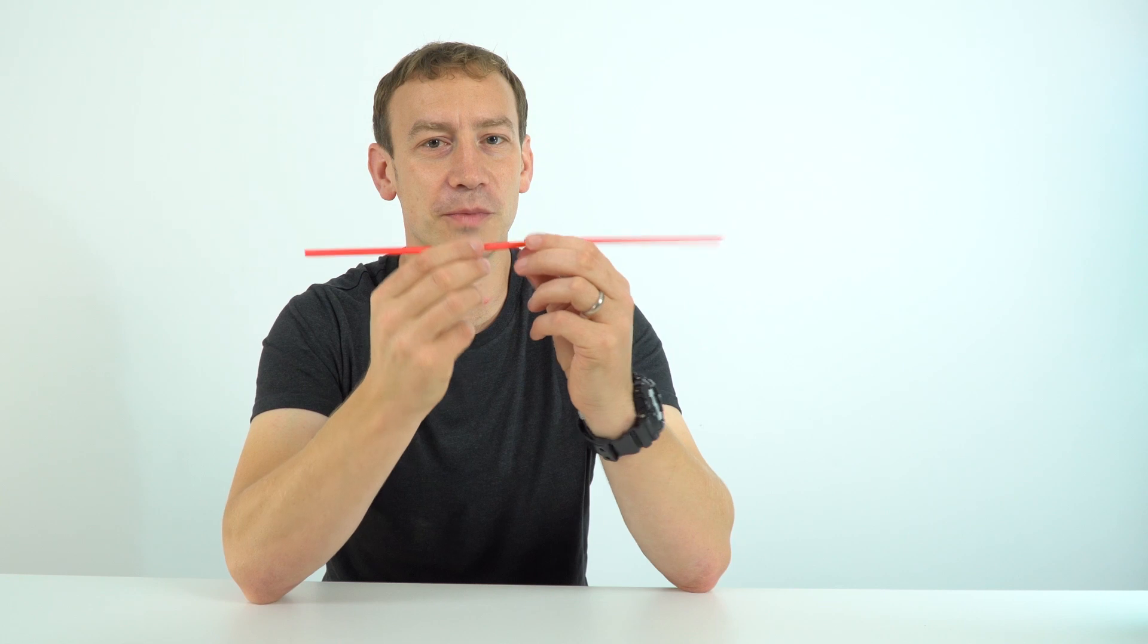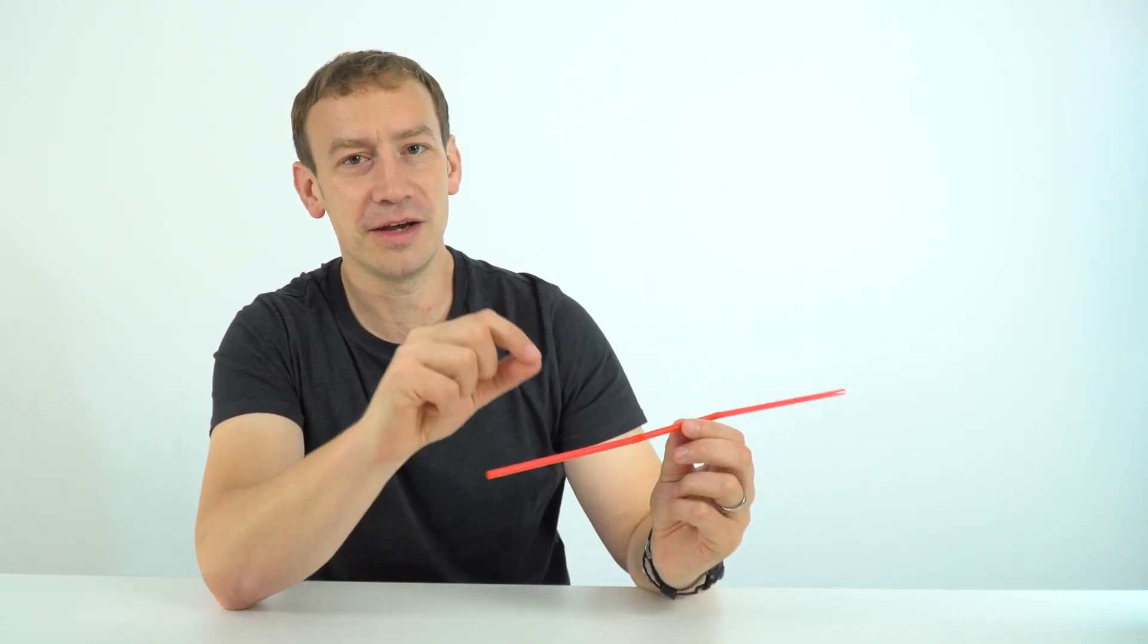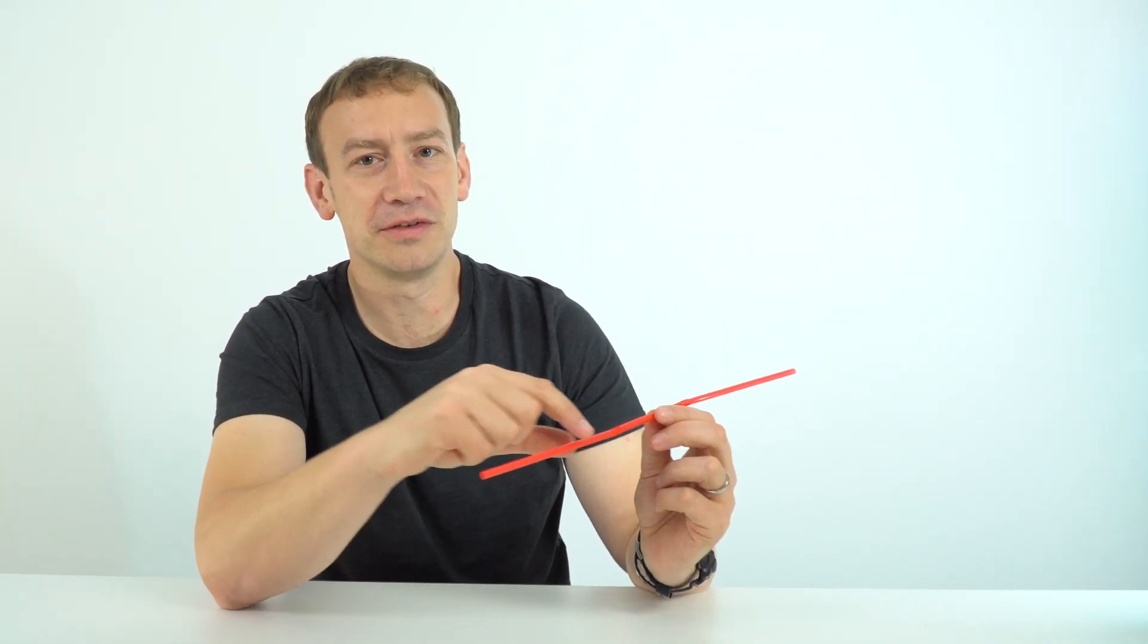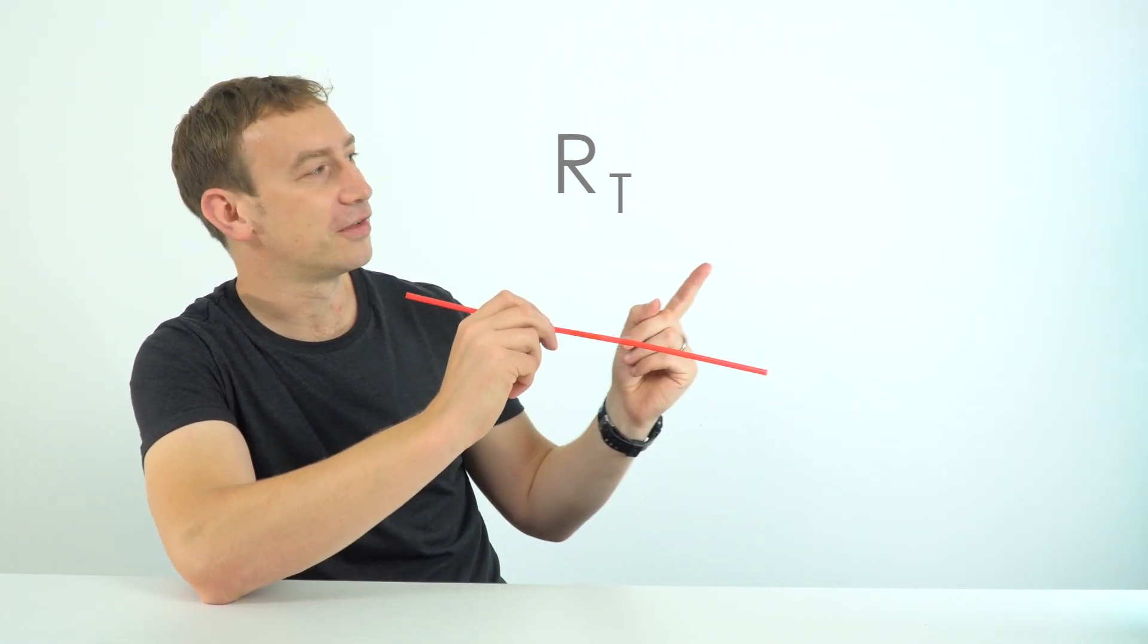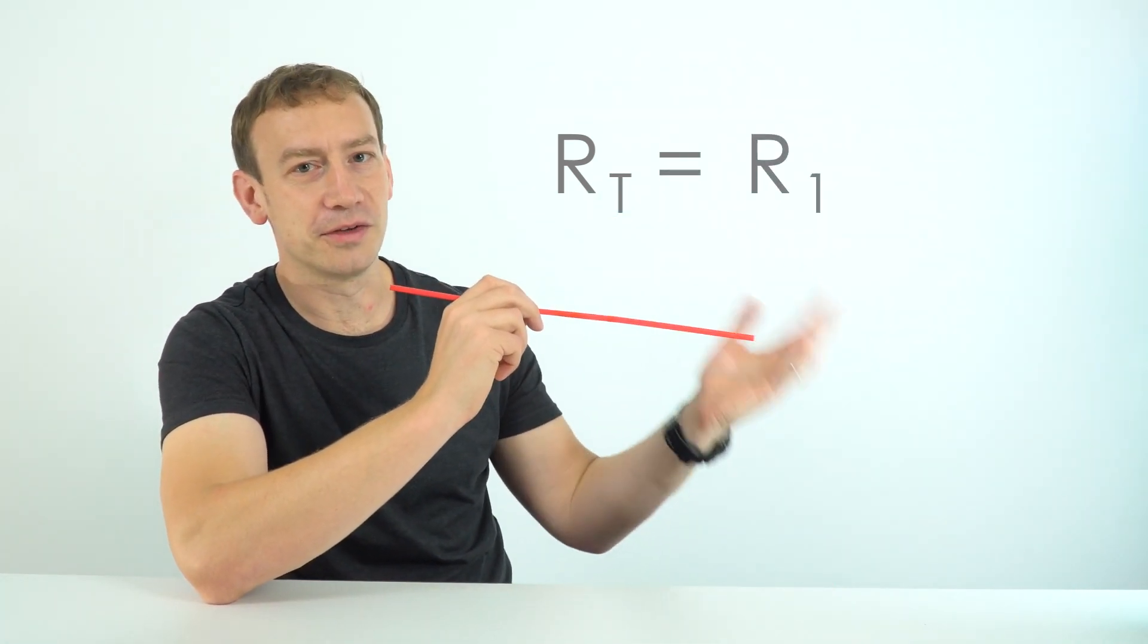And the reason for this is that when you add resistors in series, their combined resistance is equal to their individual resistances added together. So what we could say is that RT is my total resistance, and that's just equal to the resistance of the first resistor added to the resistance of the second.